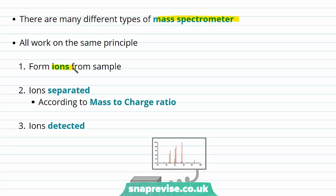So all these mass spectrometers work on the same principle. They first of all form ions from our sample, those ions are then separated and they're separated according to a mass to charge ratio, which is sometimes represented like this where M is for mass and Z for the charge.